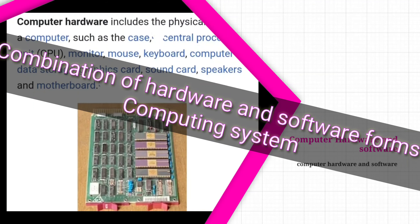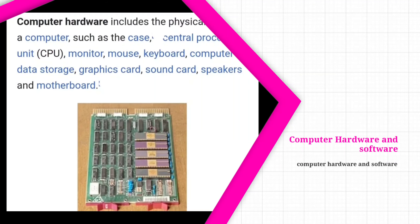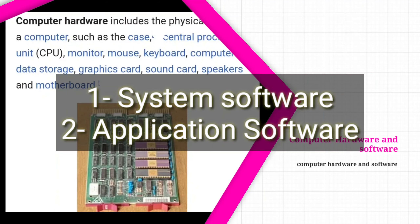Without software there is no meaning of hardware, and without hardware there is no meaning of software. The term software refers to the set of computer programs, procedures, and associated documents. Software is again of two types: application software and system software.